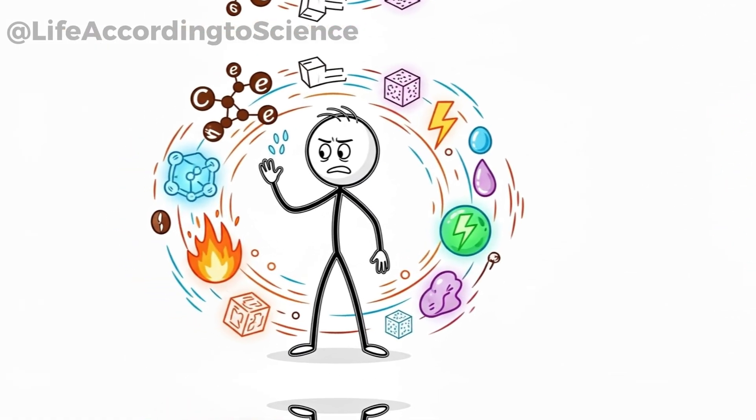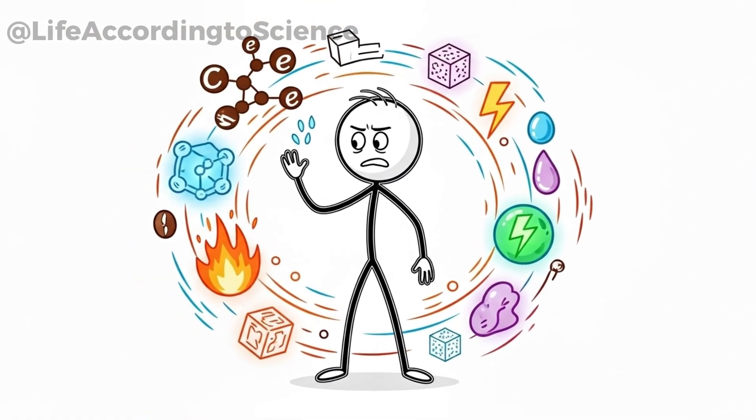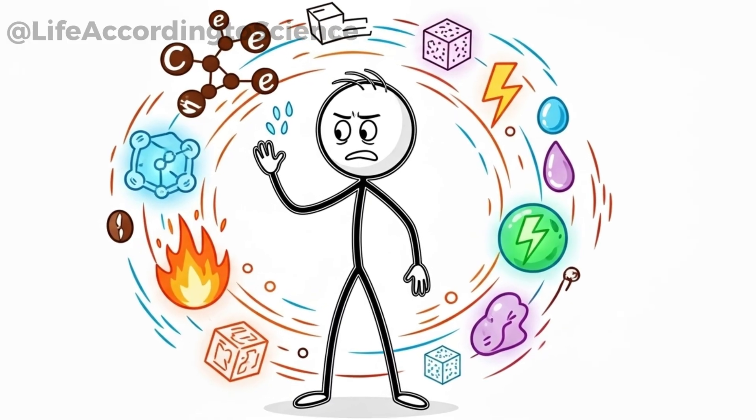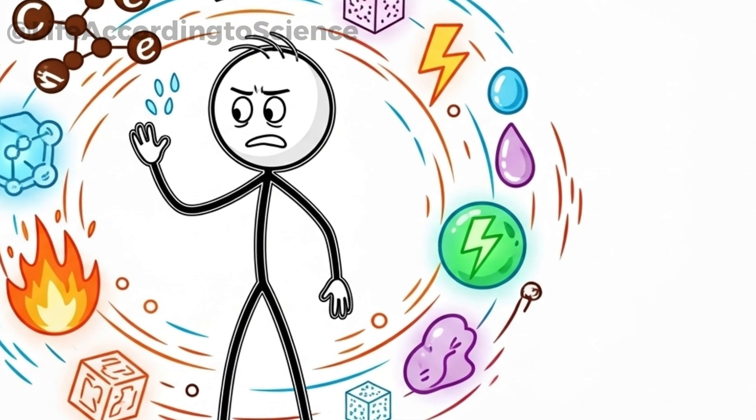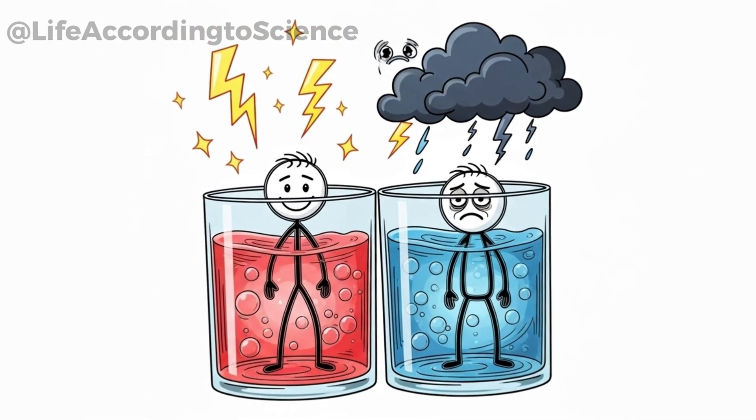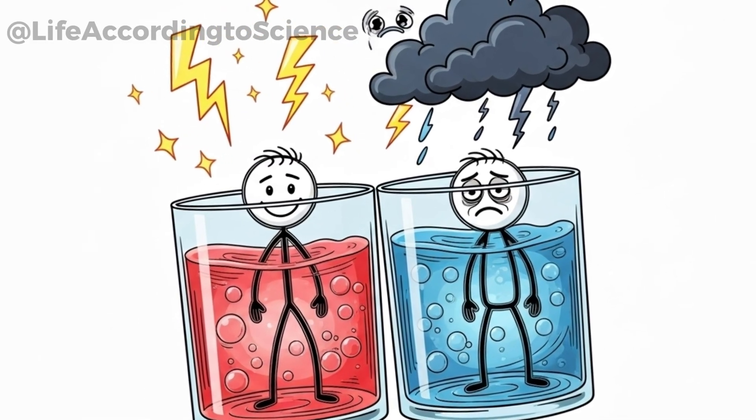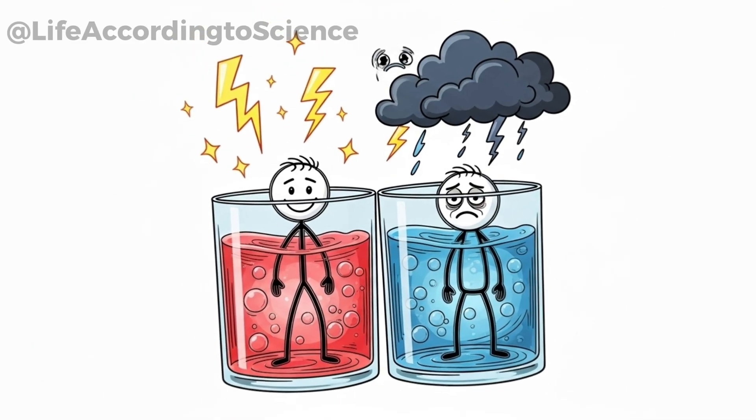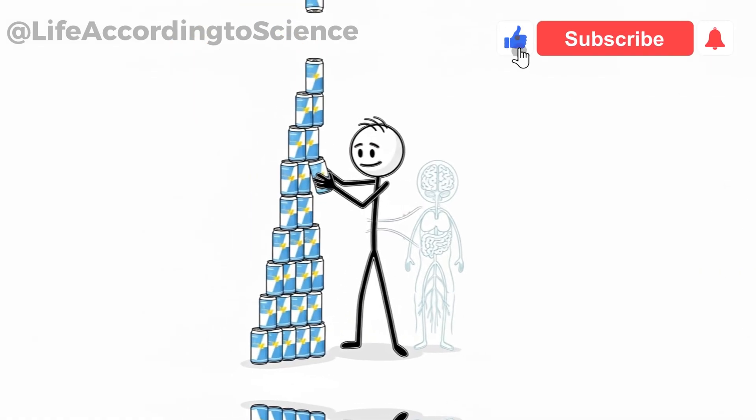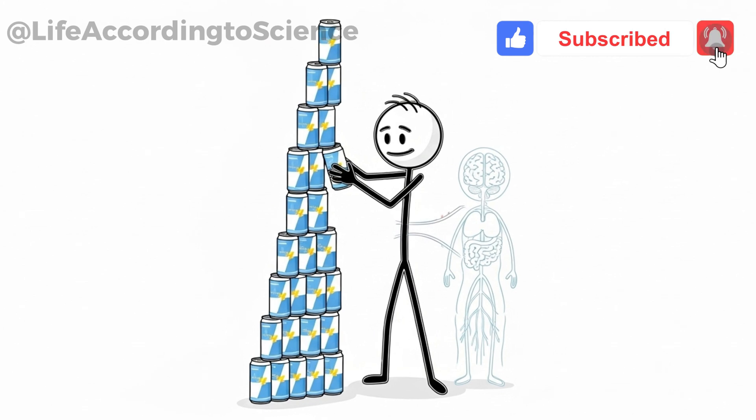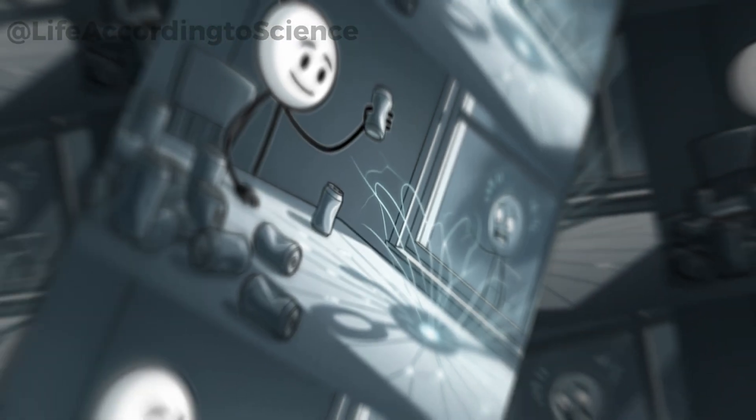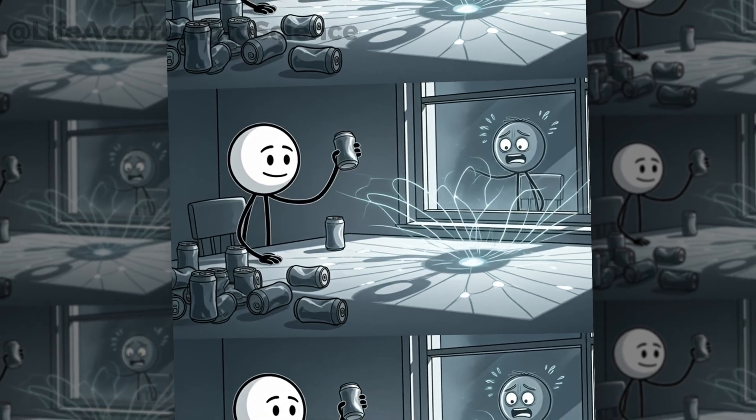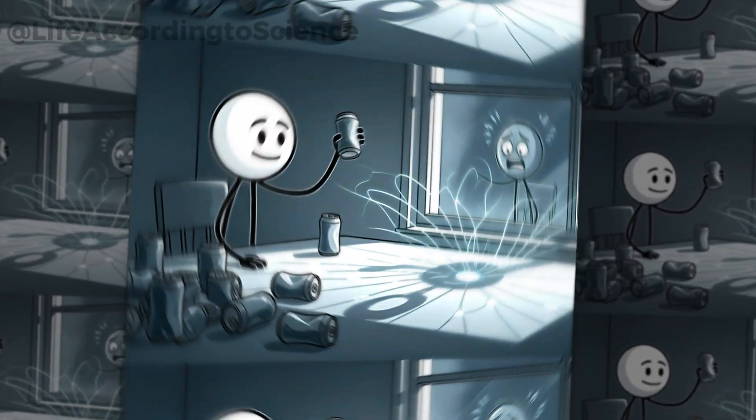It's this combination that makes energy drinks so powerful and at times so unpredictable. Your body doesn't just process them separately. It reacts to the entire mix, creating a cocktail effect that intensifies both the highs and the lows. And here's the catch. While one can might not seem like a big deal, stacking them daily for 30 days can set off a chain reaction in your body, one that doesn't end when you put the can down.